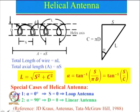A helical antenna is nothing but: you take a wire and wrap it around in this particular fashion and feed it at one of the sides, depending upon the mode we want to excite. There can be a ground plane on this side, so that the radiation can be in this direction or in this direction depending upon the mode of operation.